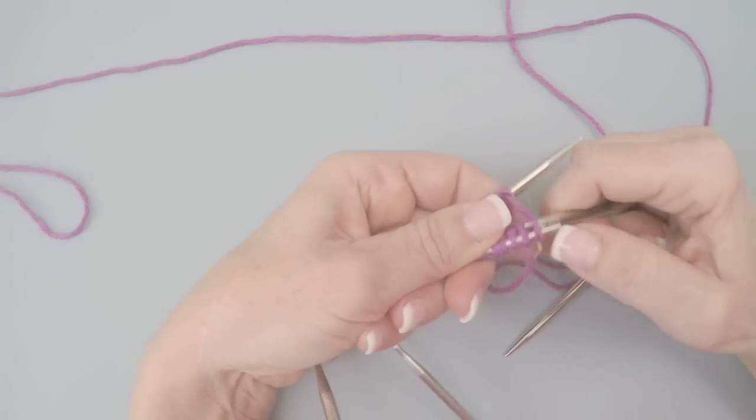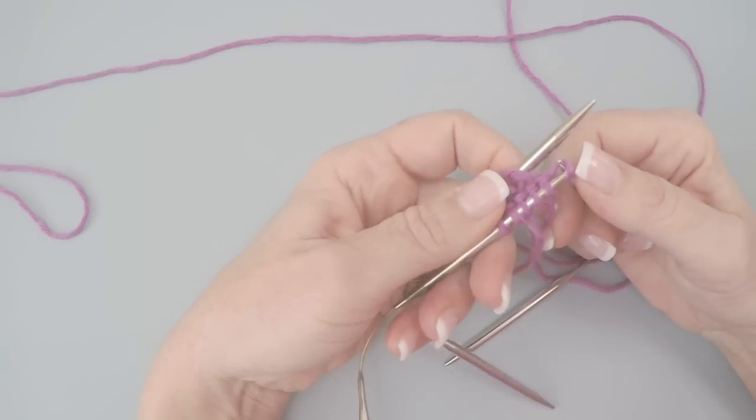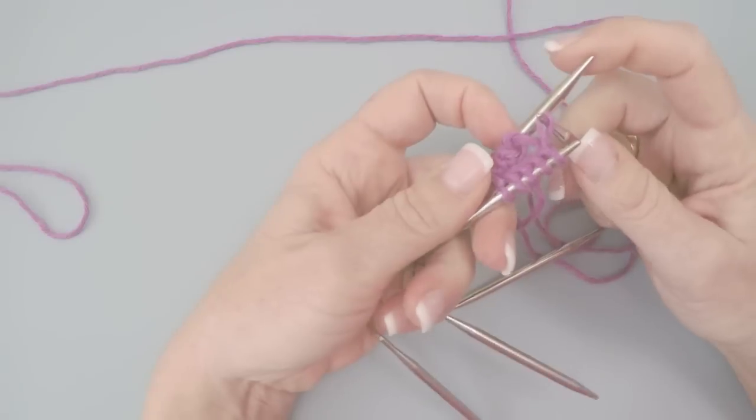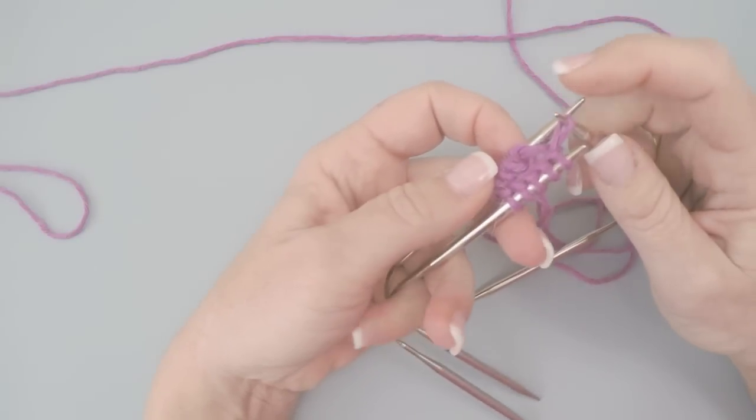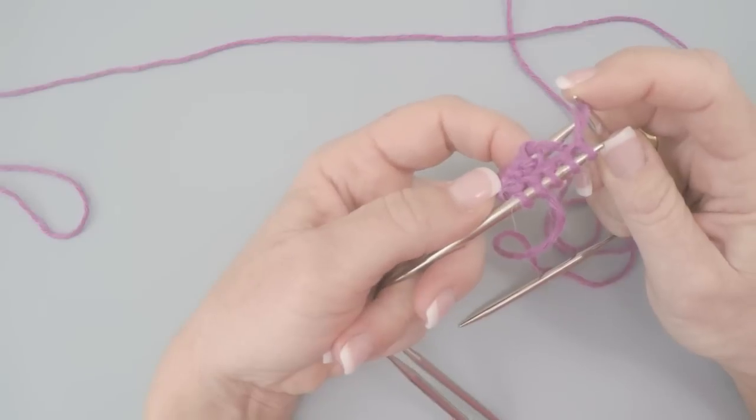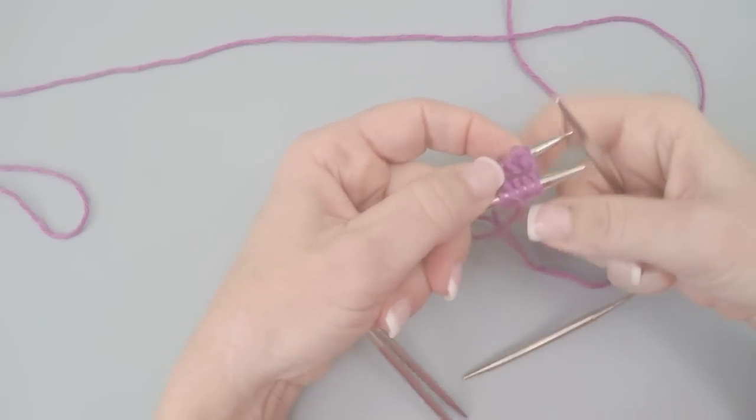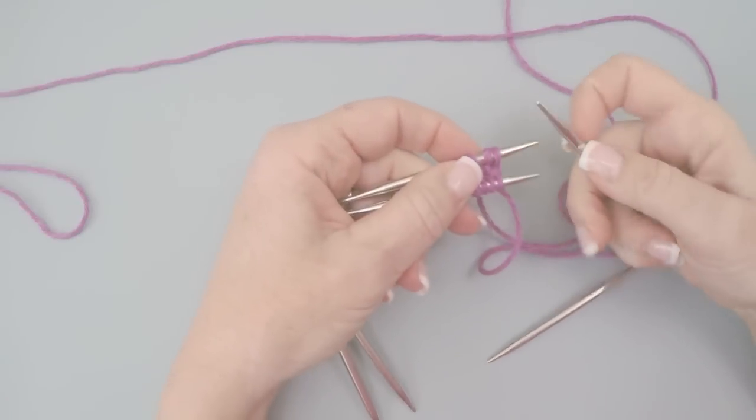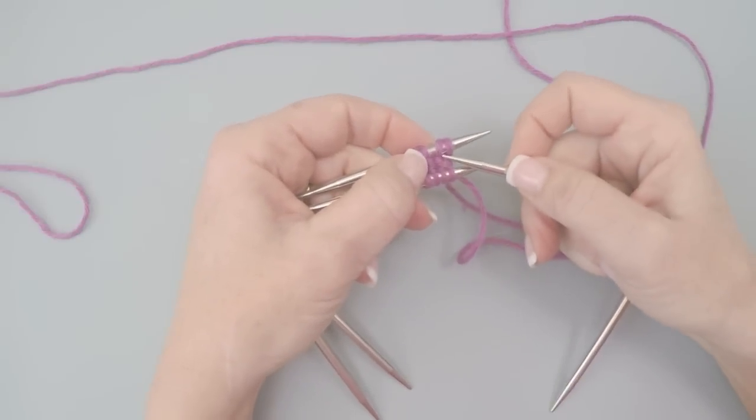One nice thing about these needles is they have two different points on each one. One's a rocket and the other one is just their standard tip. So it's kind of nice depending on what you're working on. So now it's sitting next to the stitch with the working yarn.